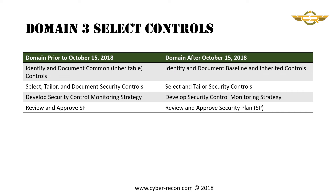Domain 3 remains relatively unchanged with slight modifications to the verbiage of the subject areas. Prior to October 15, the subject areas are: identify and document common controls, select and tailor security controls, and review and approve the security plan. After October 15, the subject areas are: identify and document baseline and inherited controls, select and tailor security controls, develop security control monitoring strategy, and review and approve the security plan.